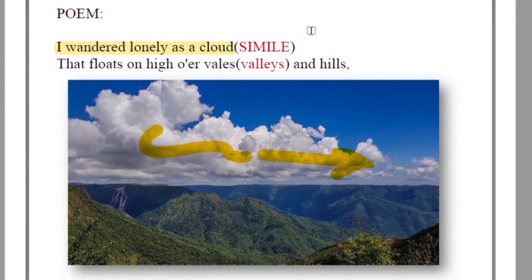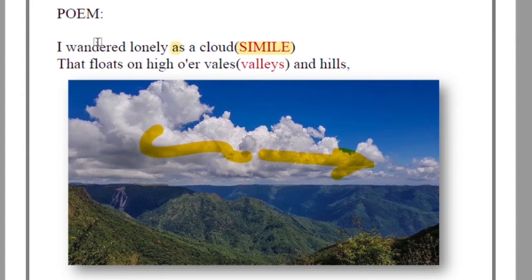Just like the cloud wanders in the sky here and there, the poet was also wandering here and there. So he compares himself with the cloud. What kind of figure of speech is this? This is a simile. Simile is a figure of speech where we compare two things using 'like' or 'as.' Here, 'as' is used to compare the movement of the speaker with the movement of the cloud — both wandering without any particular purpose or direction.